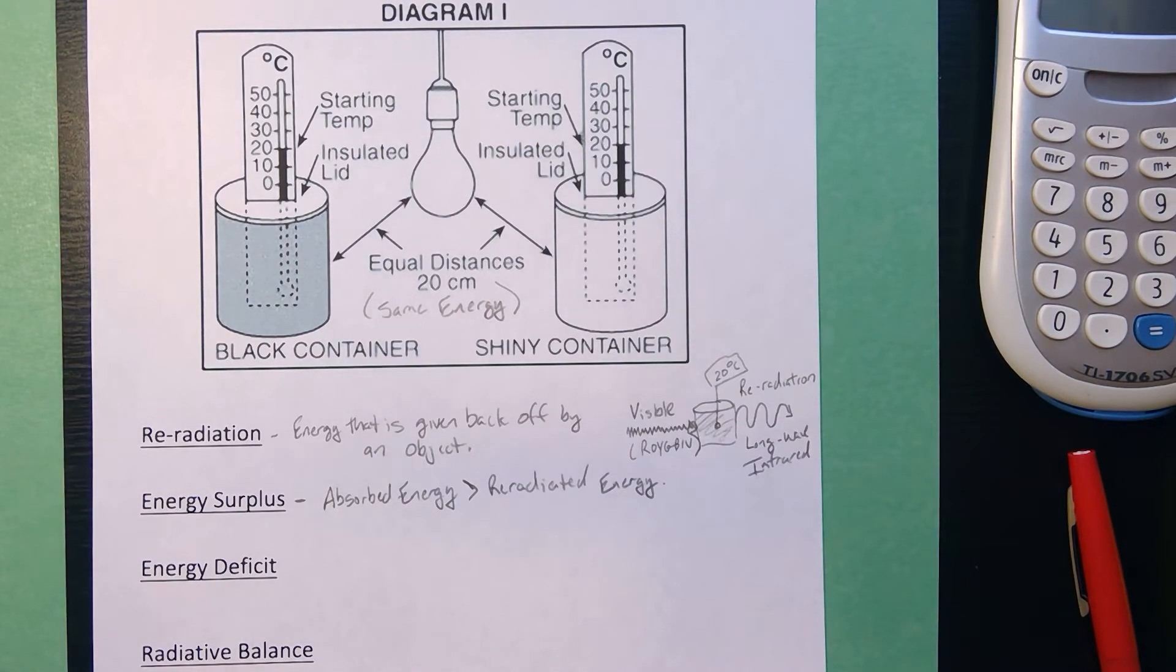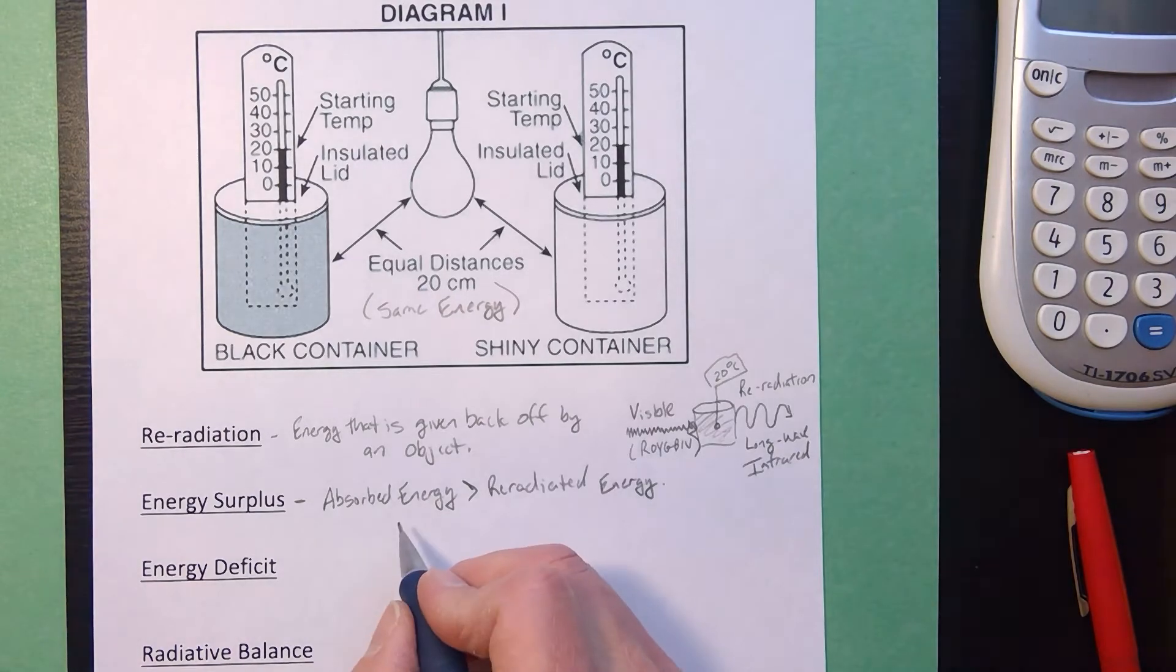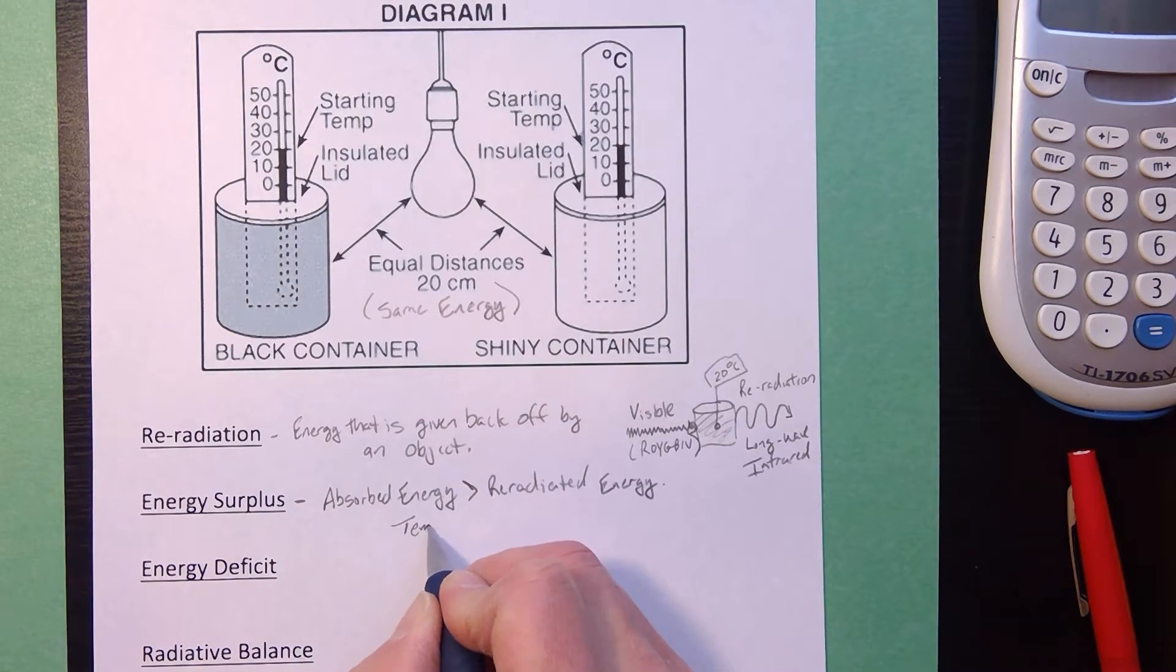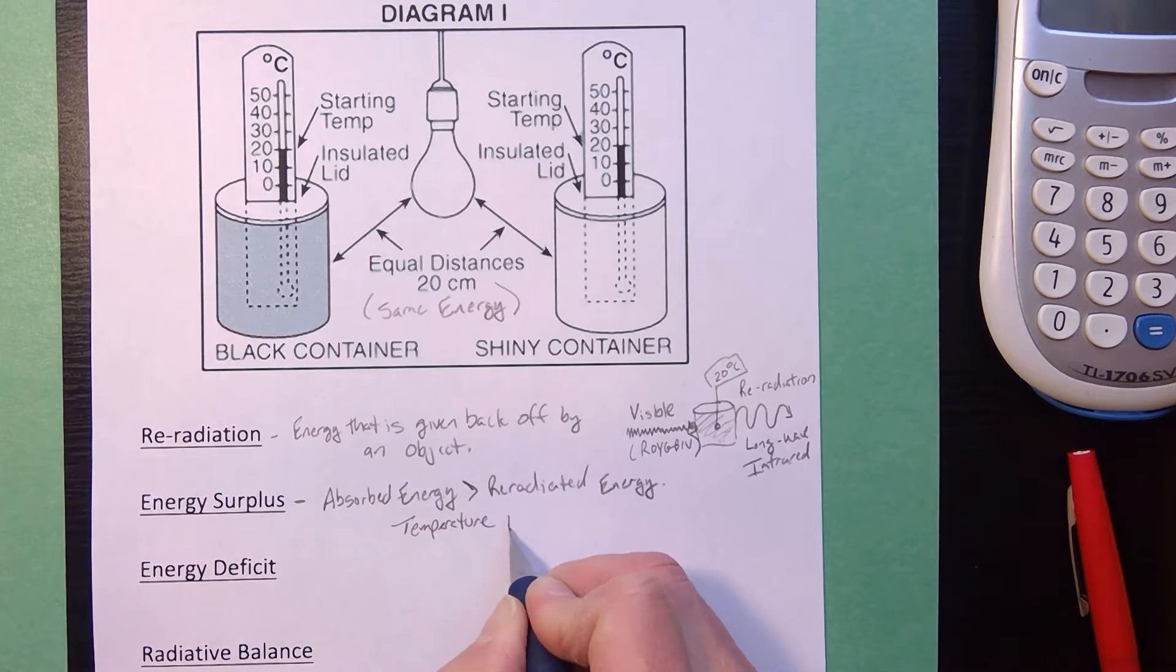So your object is taking in more joules than it's giving off. At the beginning of the experiment, when we first put the light bulb on for the first 10 minutes, both cans were actually in a state of energy surplus. How could we see that they were in energy surplus? You know it's an energy surplus if the temperature increases.